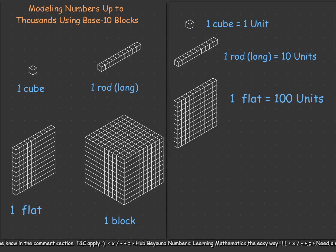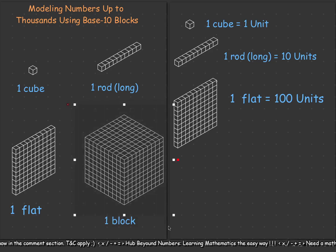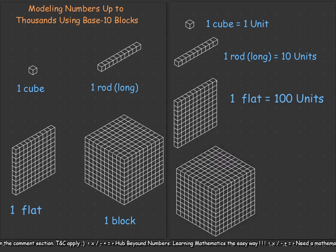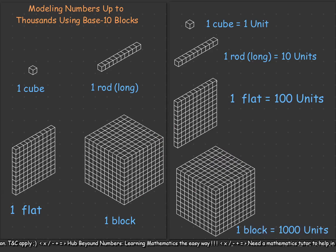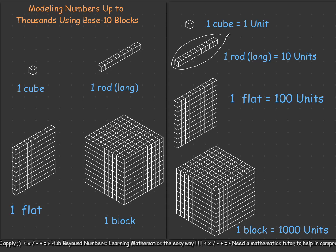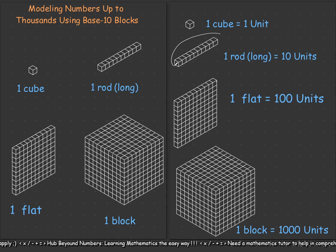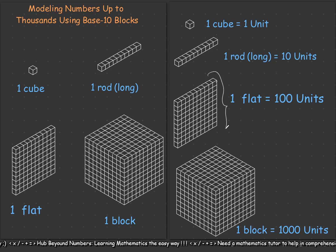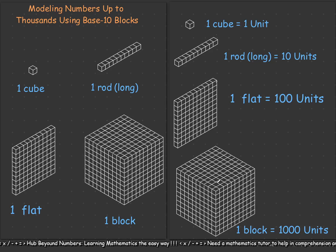Then we come to our last block. The block is made up of 10 flats, so one block equals 1,000 units. Remember: 10 cubes give one rod, 10 rods give one flat, and 10 flats give one whole block. That is the relationship between these multi-base blocks.